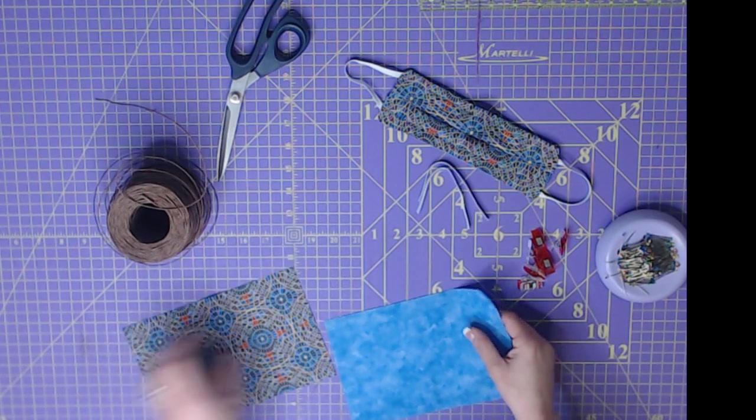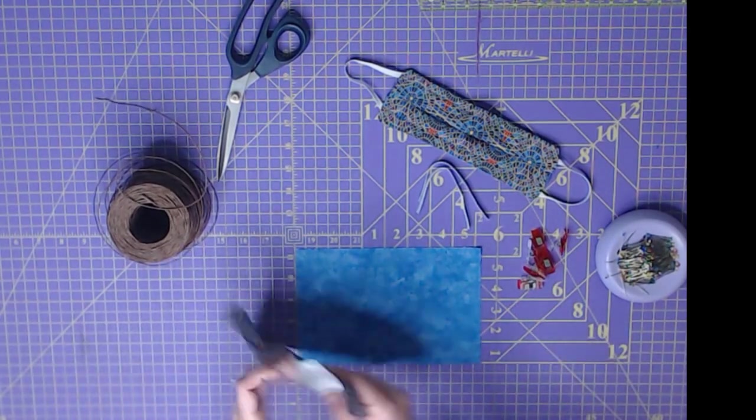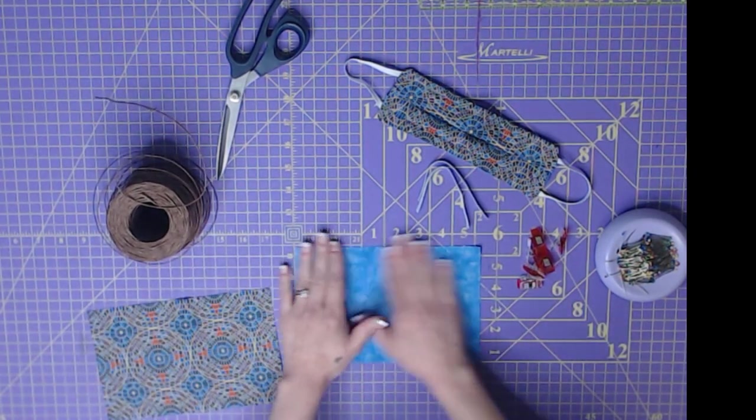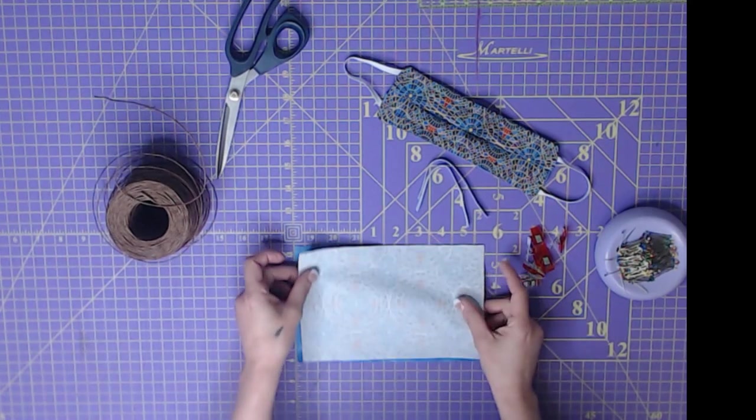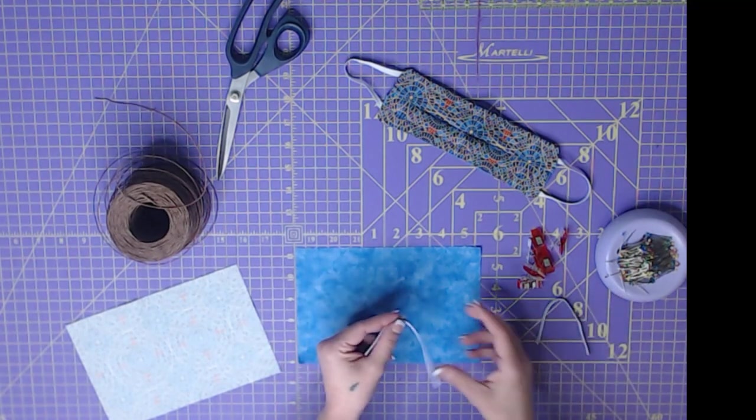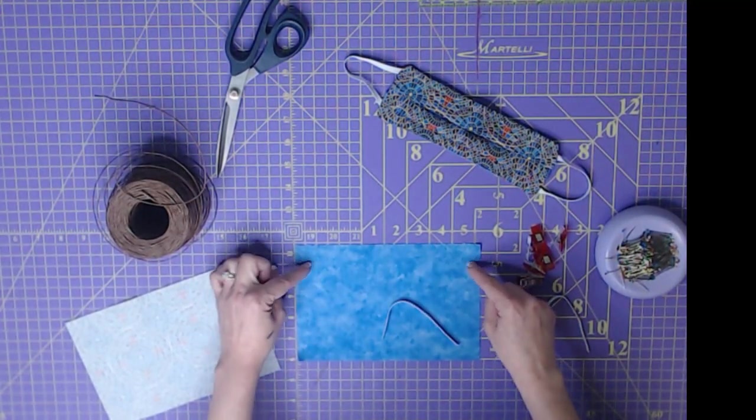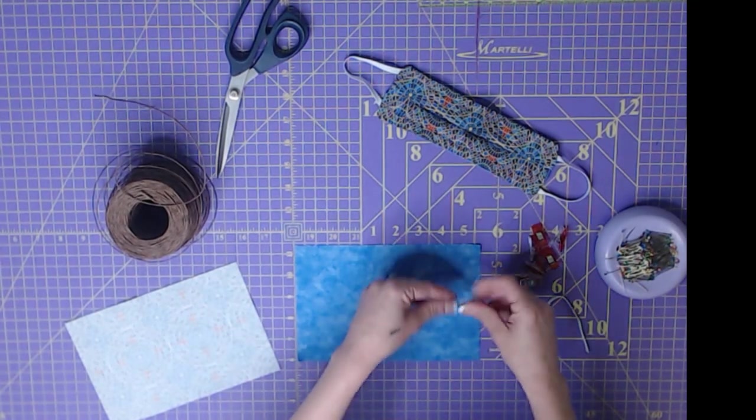All right. So we have our two layers. I'm going to use this one as my first layer and this one as my top layer. So I've got this one face up. This one is going to go face down. But of course, I have to put in my ties or my elastics first. If you're using ties, just make sure that they meet in the middle right here.